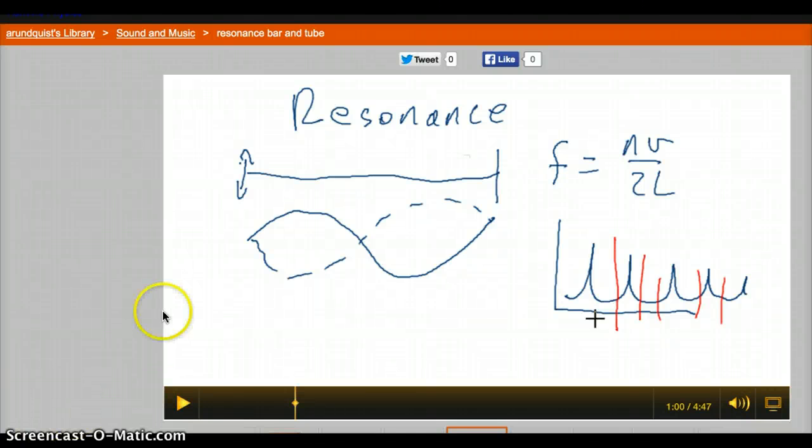This is about resonance. Here's a string, and when the string is moving up and down, it makes this wave shape called a standing wave. To get this perfect standing wave, you need a frequency of n times the speed over 2L. For example,